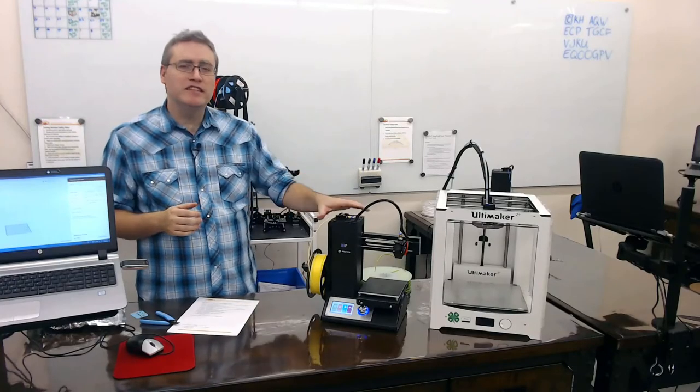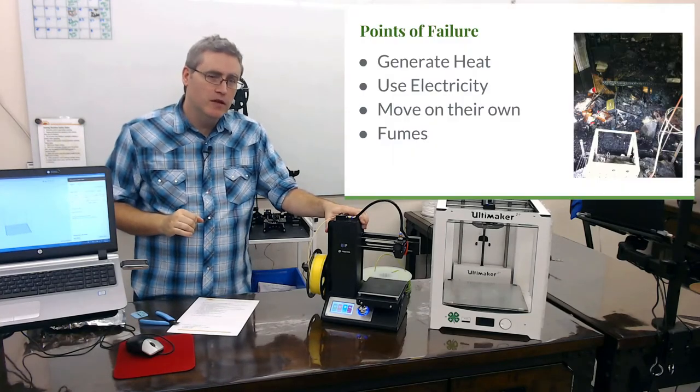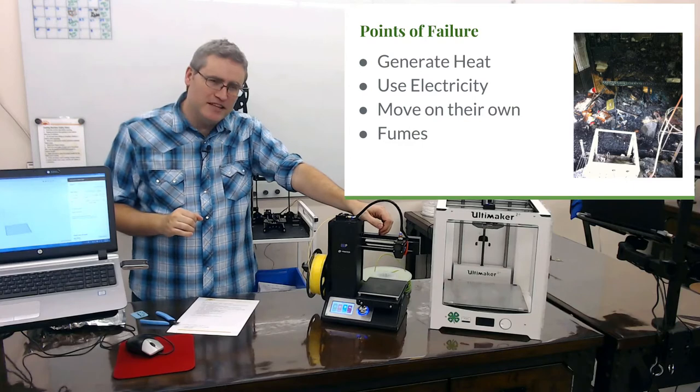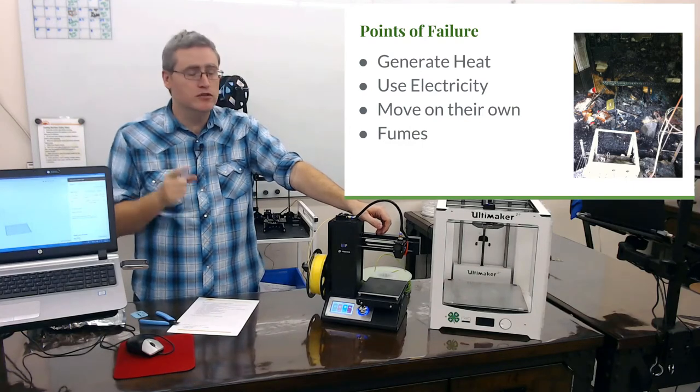So did you have a chance to guess at some of the danger points? There are in fact four that we need to think of. Now the most obvious of course is the hotend. Yes, it gets hot and if you touch it while it's running it might leave you with a pretty good welt, so that's one.